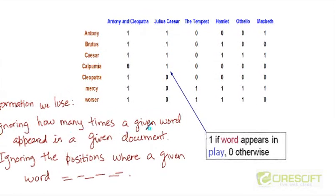So we are ignoring how many times a given word appeared in a given document. We are just recording the presence or absence of a given word in a given document.